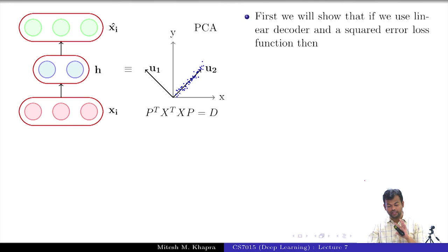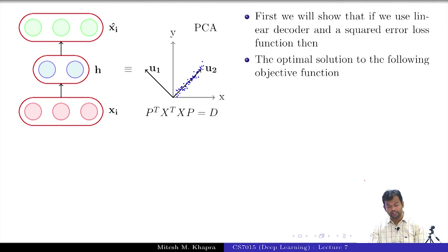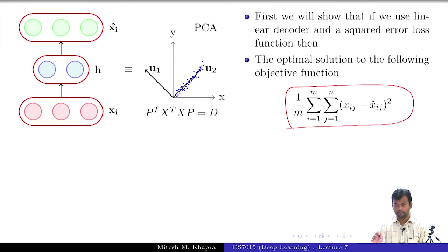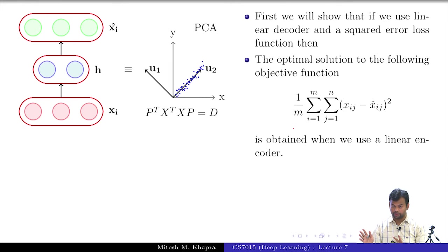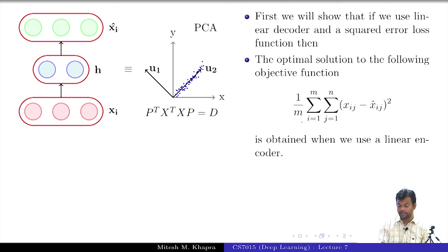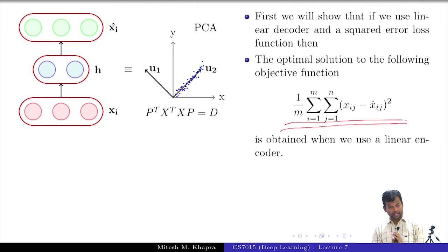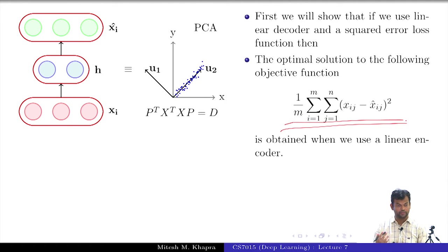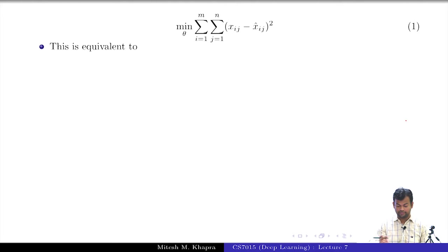So first, we will show that if you use a linear encoder, decoder, and a squared error loss function, then the optimal solution to the following objective function — the squared error loss — is obtained when we use a linear encoder. I have fixed the decoder to be linear, fixed the encoder, and the loss function is the squared error loss. Under these conditions, I am trying to minimize this loss function. I am telling you that the optimal solution occurs when the function g is a linear function — you cannot choose sigmoid or logistic. Everyone gets what is being stated here?